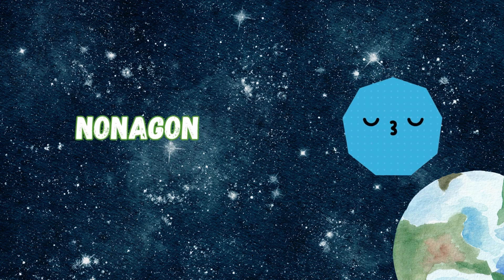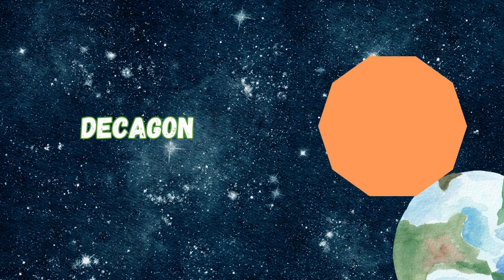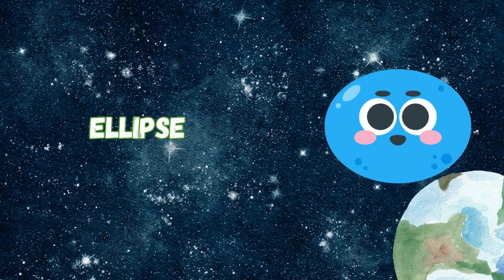Nonagon has nine sides so neat, a rare shape, it's quite the feat. Decagon has ten sides to see, a polygon with symmetry.